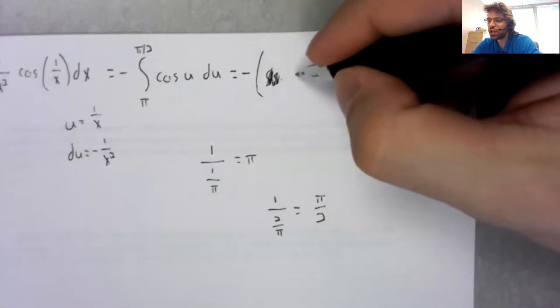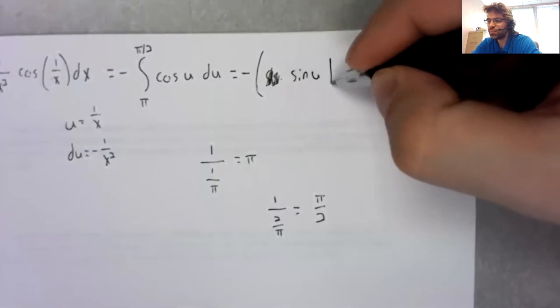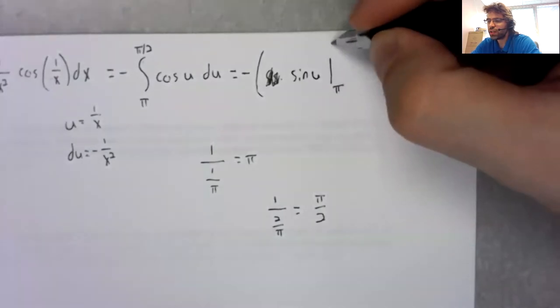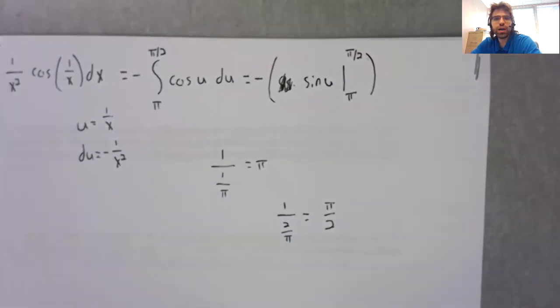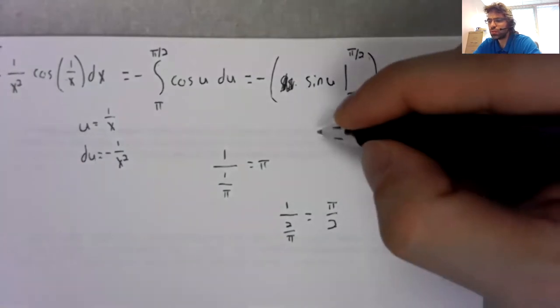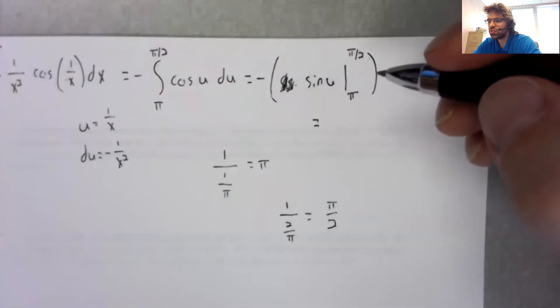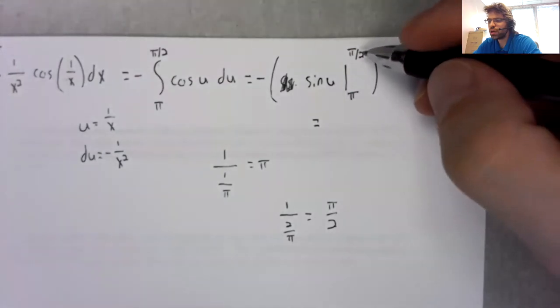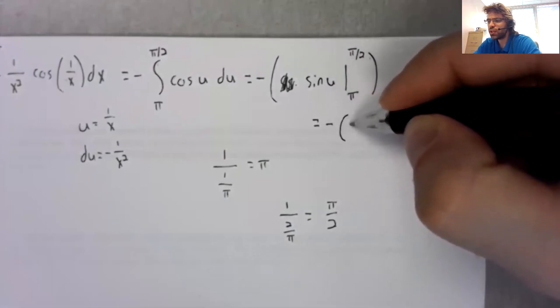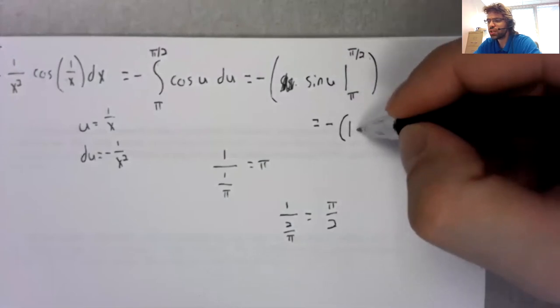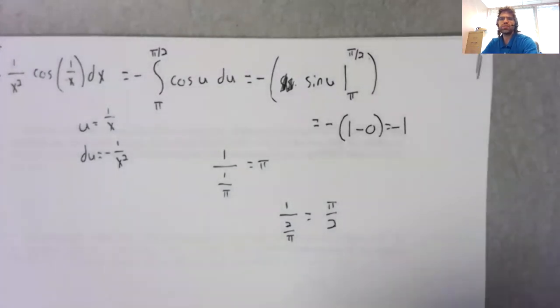what am I writing? Is the sine, evaluated from π to π over 2. The sine of π over 2 is 1. The sine of π is 0.